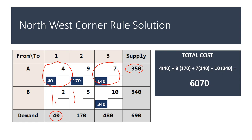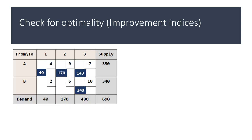The total cost for this allocation is 6070. Next we want to check if this initial feasible solution allocation is optimal. For that we must evaluate the improvement indices for the empty cells.